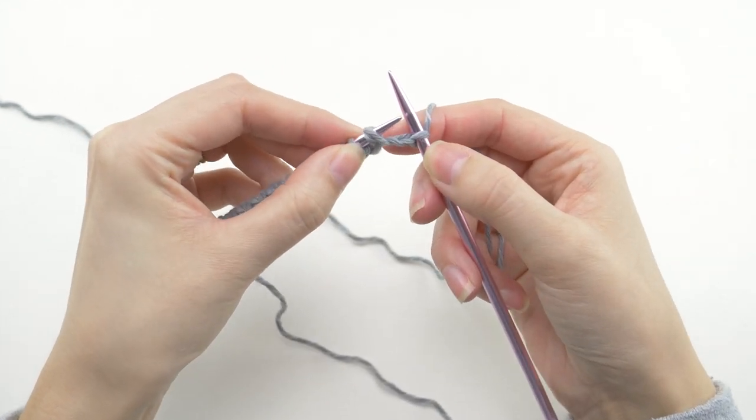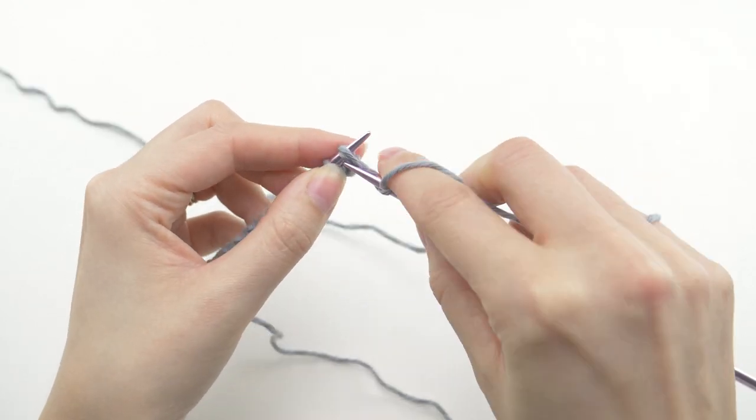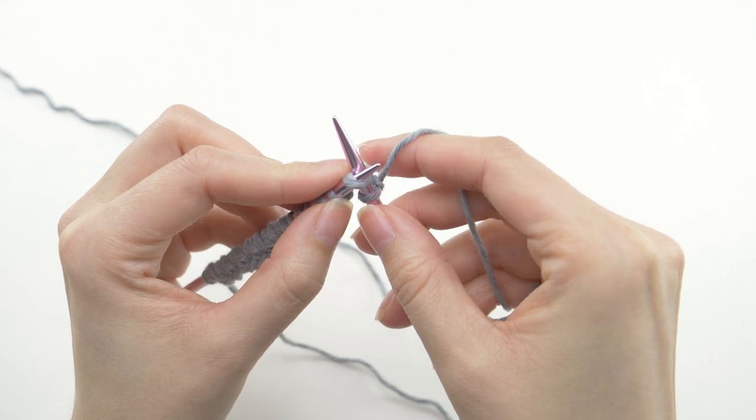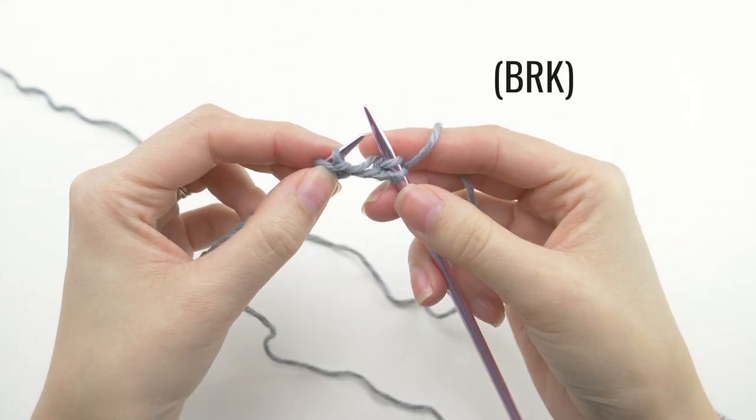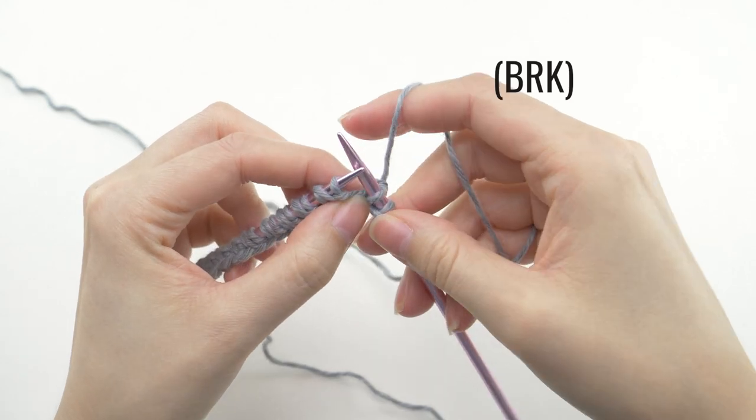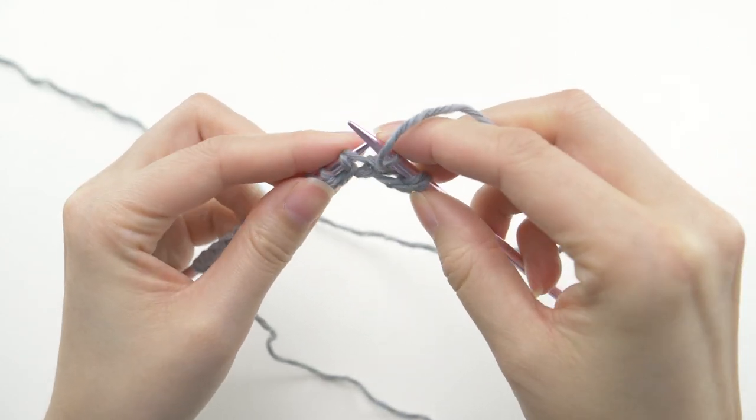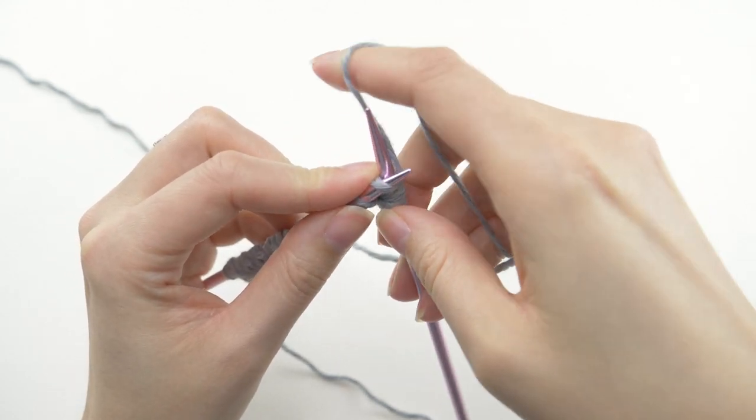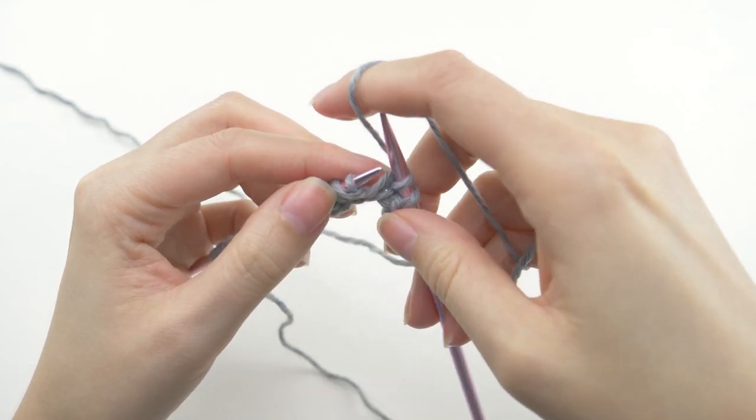And next, we have a brioche knit, where it looks like there are two loops there. Go ahead and knit that. Now this is called a brioche knit, or you'll see it as BRK in the pattern. Then our regular repeat begins. Pull the yarn forward, slip one purlwise, and BRK. And keep going with that repeat.